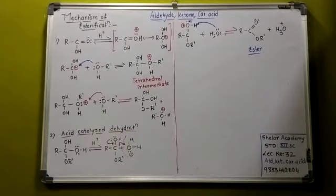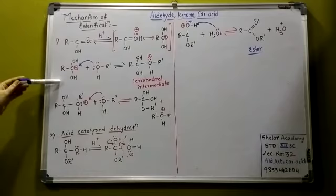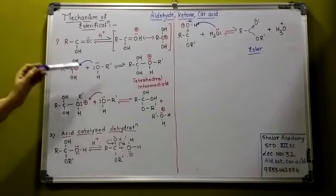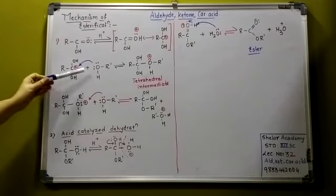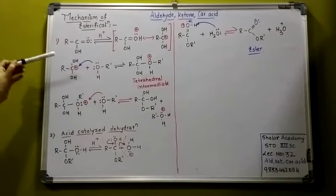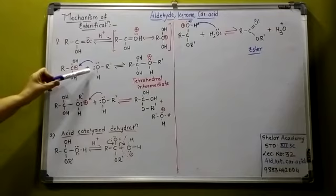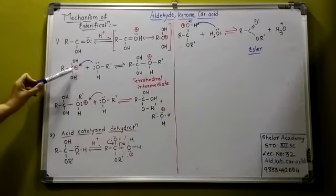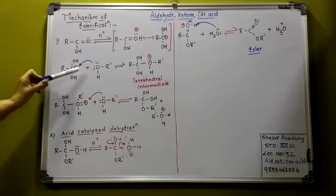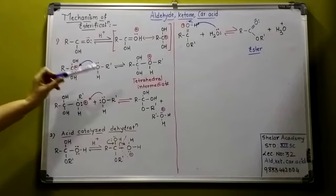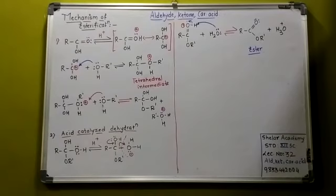Now the next step: this protonated carboxylic acid is reacting with an alcohol. Same thing—this is Lewis base, this is Lewis acid. They're opposite, hence the reaction takes place. This is rich, this is deficient. This will attack this, so this is the tetrahedral intermediate which you get.